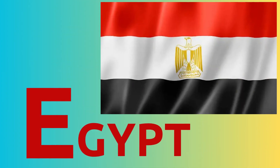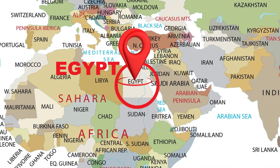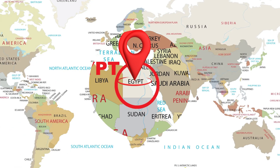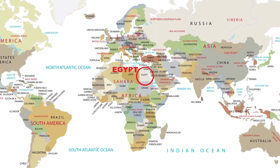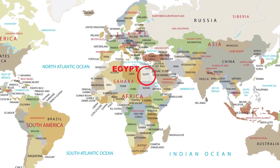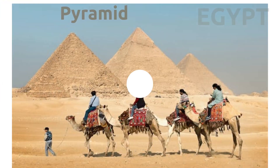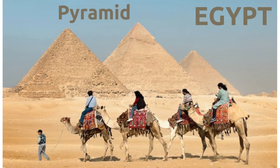E. E for Egypt. Official name: Arab Republic of Egypt. Major river: the Nile. Egypt is famous for pyramids, pharaohs, mummies, and tombs.